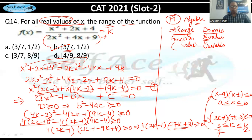To summarise the traditional method: set f(x) = k, cross multiply to form a quadratic, apply D ≥ 0 for real values of x, then solve the resulting inequality to get the range of k, which is option B.